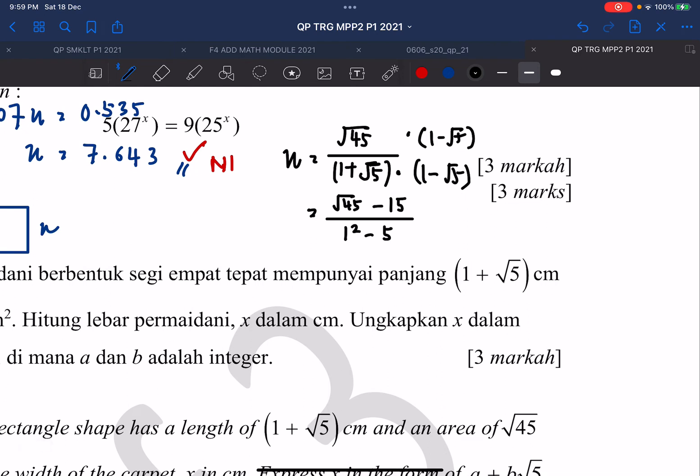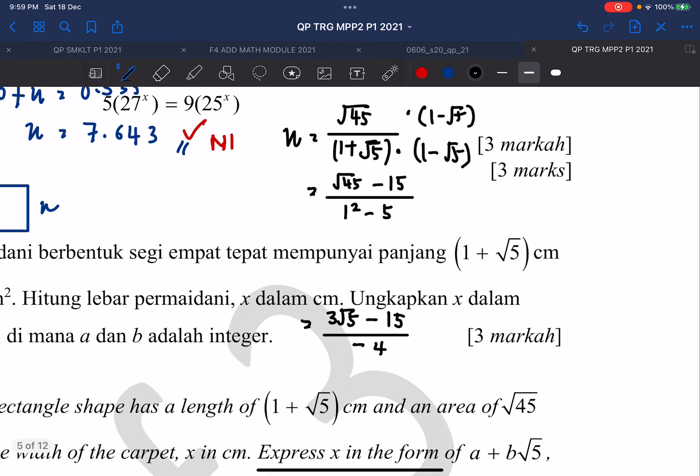So you can simplify as 3 root 5 for square root of 45 minus 15 divided by negative 4. Then you can continue to simplify into 2 single fractions. So 3 root 5 divided by negative 4, you should get negative 3 over 4 root 5. Negative negative, then positive, positive 15 over 4.